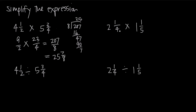Let's do another example with multiplication: 2 and 1 fourth times 1 and 1 fifth. We change both to improper fractions. For the first: 4 times 2 is 8, and 8 plus 1 is 9, so we get 9 over 4. For the second: 5 times 1 is 5, and 5 plus 1 is 6, so we get 6 over 5. Then we multiply across the numerators: 9 times 6 is 54, and 4 times 5 is 20.